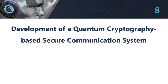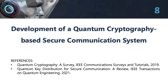8. Development of a quantum cryptography-based secure communication system. This topic involves developing a secure communication system that uses the principles of quantum mechanics to ensure secure and private communication. The project could involve developing and implementing a prototype system that uses quantum cryptography techniques, such as quantum key distribution, to encrypt and decrypt data transmitted between two parties. The project could also involve evaluating the security and performance of the system in real-world scenarios.